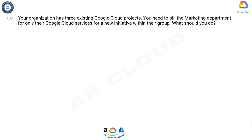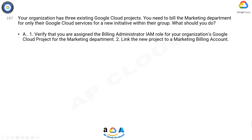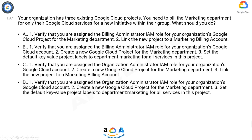Question 197: Your organization has three existing Google Cloud projects. You need to build a marketing department for only their Google Cloud services for a new initiative within their group. What should you do? Option A: 1) Verify that you are assigned the Billing Administrator IAM role for your organization's Google Cloud project for the marketing department. 2) Link the new project to a marketing billing account. Option B: 1) Verify that you are assigned the Billing Administrator IAM role for your organization's Google Cloud account. 2) Create a new Google Cloud project for the marketing department.